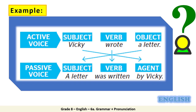Now let's look at an example showing how to change a sentence in the past simple from active into passive. 'Vicky wrote a letter.' Vicky is the subject, 'wrote' is the verb — past simple — and 'a letter' is the object. Step one: start with the object — 'a letter.' Step two: use 'was' or 'were' — since 'a letter' is singular, we use 'was.' Step three: add the past participle of the verb 'wrote,' which is 'written.' So: 'A letter was written by Vicky.'